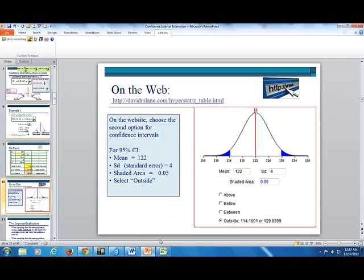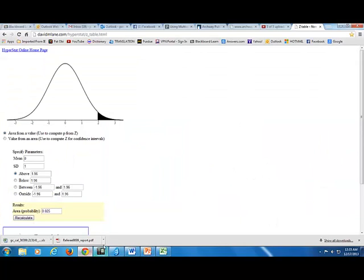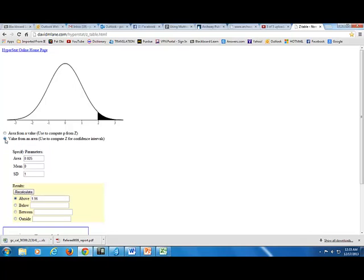Next, we can also use one of several websites to find the limits of the interval. One of my favorites is this one right here, Hyperstat. So let's go there. Now, to find confidence intervals, you want to choose this second option here. You click on it. And then for area, it's going to be 0.05. So 0.05 would be the alpha region. That's what the area here is indicating.